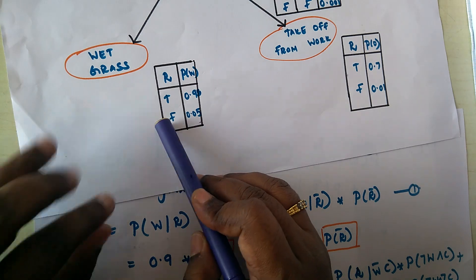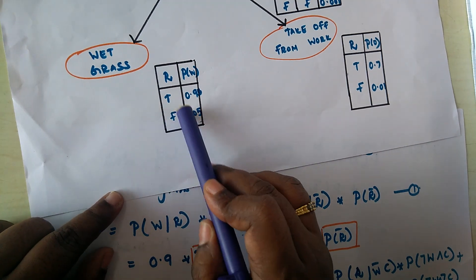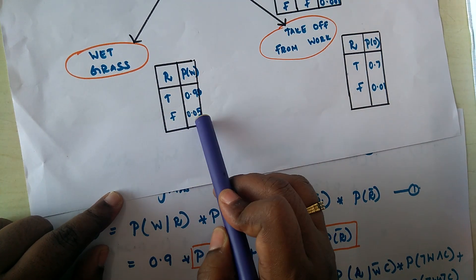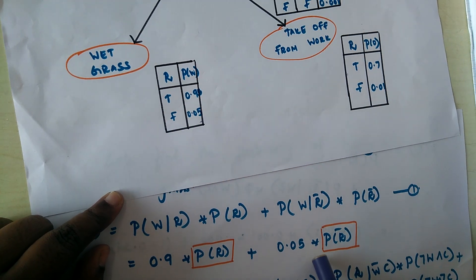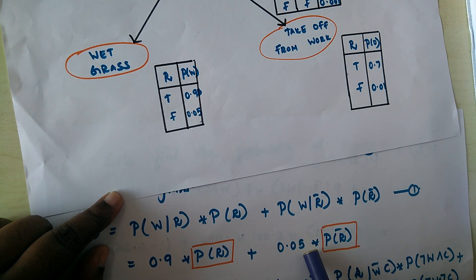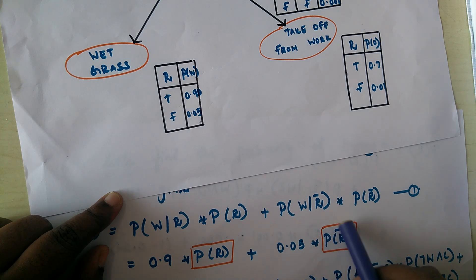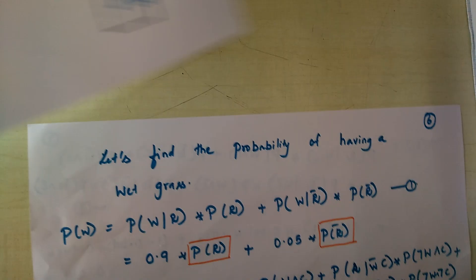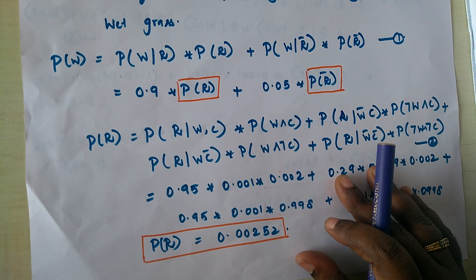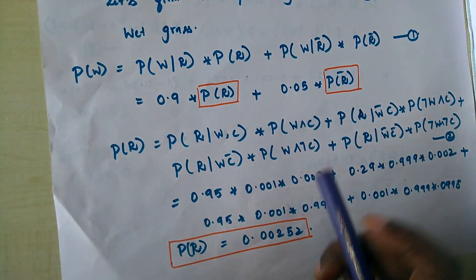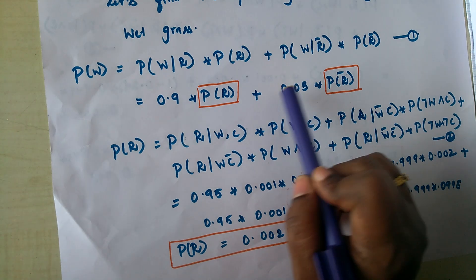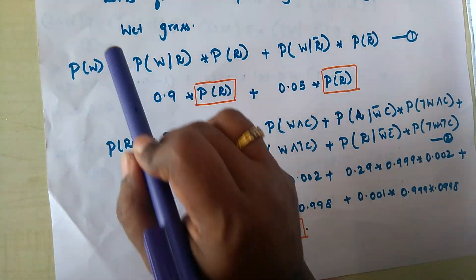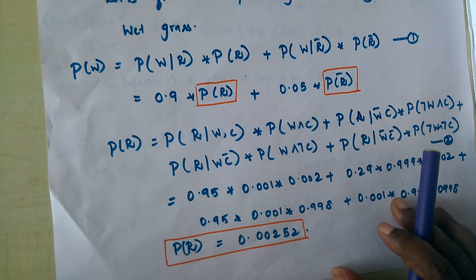Given it is not raining — that is, rain is false — the probability of wet grass is 0.05, multiplied by the probability of not raining. We will calculate these two factors separately and substitute them back into this equation to get the probability of wet grass.